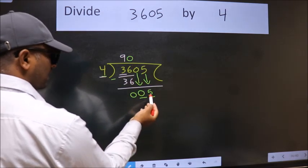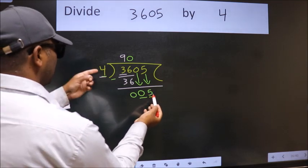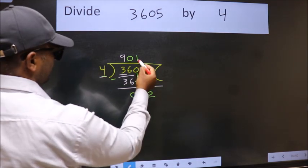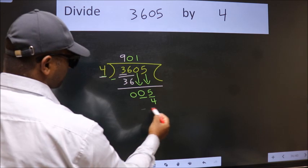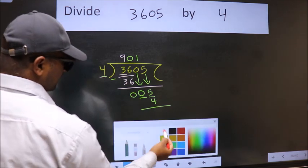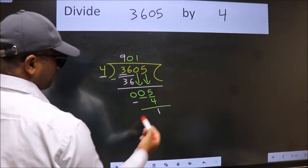So, 5. A number close to 5 in the 4 table is 4 ones 4. Now we subtract. We get 1.